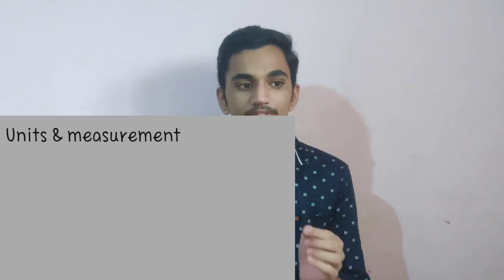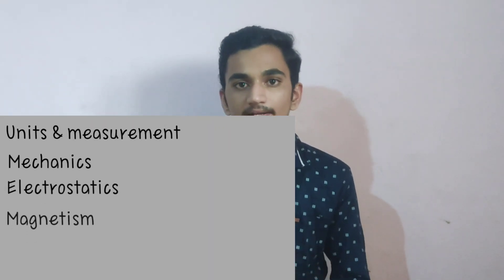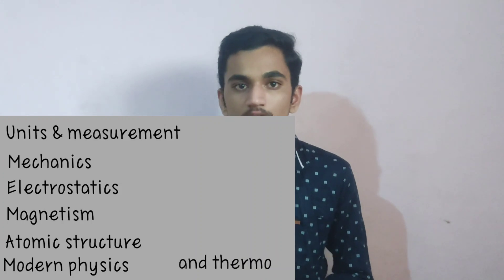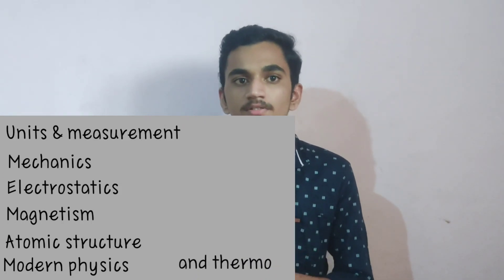Let us talk about the physics part. One question from units and measurement is compulsorily asked in every previous year question paper. Other important parts in physics are mechanics, electrostatics and current electricity, magnetism, atomic structure, modern physics, and thermodynamics. All these sections will cover 13 to 14 questions from physics, and one or two questions come from other remaining parts like fluid mechanics and wave mechanics.